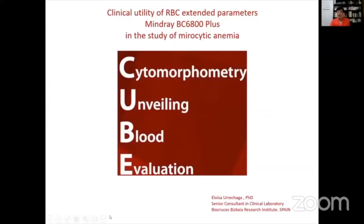Thank you Dr. Handu for enlightening us on how optics can be used not only for counting and observing WBCs but also for looking at RBCs in a different way. We now know we use scatterplots not only for WBCs but also for RBCs. I now invite Dr. Eloisa to throw some light on discriminant values of percentage microcytic and percentage hypochromic cells in differential diagnosis of microcytic anemia.